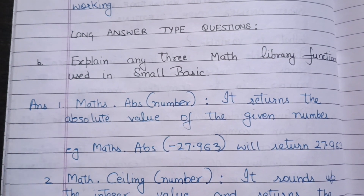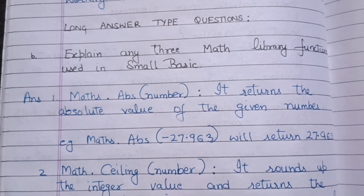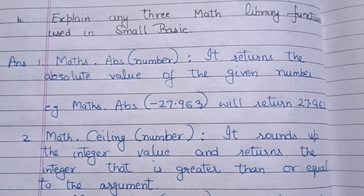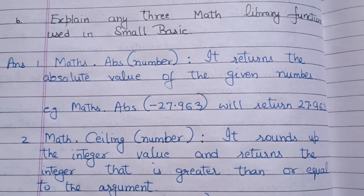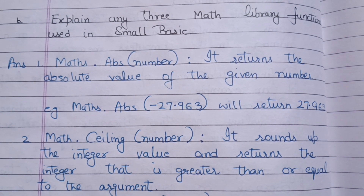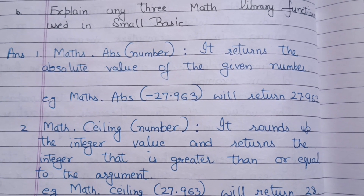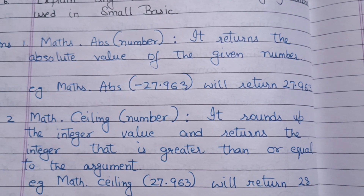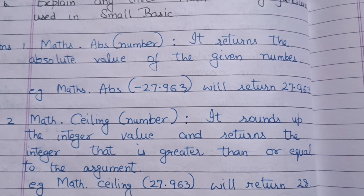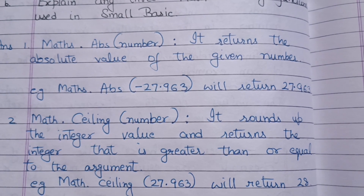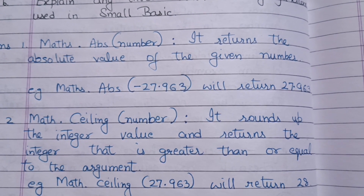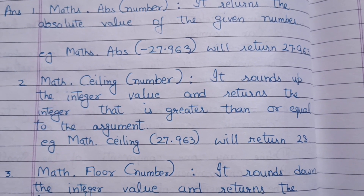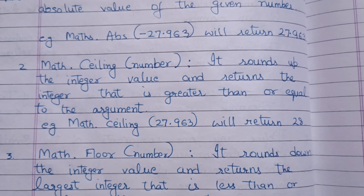Next, Math.Ceiling(number) — it rounds up the integer value and returns the integer that is greater than or equal to the argument. For example, Math.Ceiling(27.963) will return 28, since it rounds up to the next greater integer.